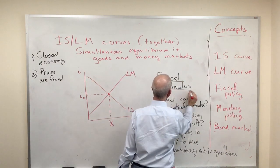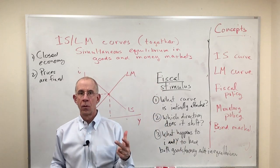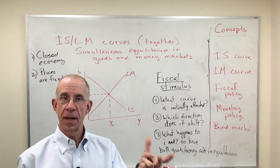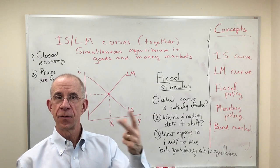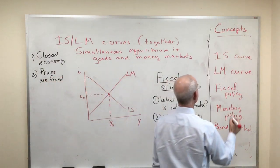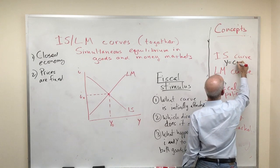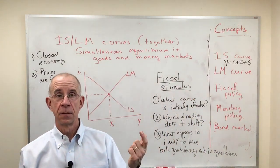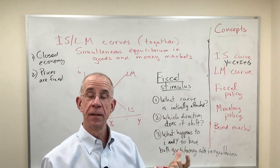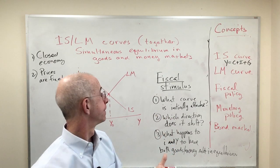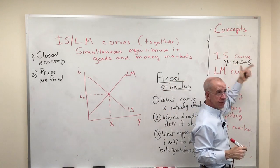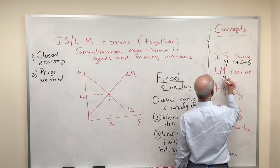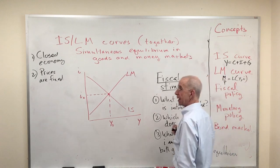But back to the stimulus. First thing you want to think about is, does this affect the money market or does it affect the goods market? Now, recall that the underlying relationship of the IS curve is where GDP is equal to expenditure. That's the Y equal to C plus I plus G. LM curve is where the money supply equals the demand for money.